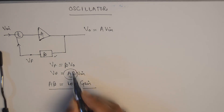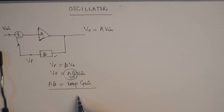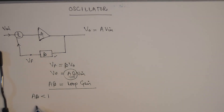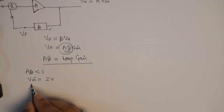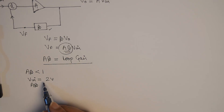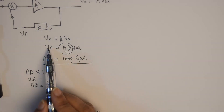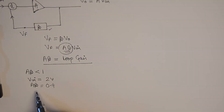Now A·beta is going to play a very vital role in the generation of oscillations. If the value of loop gain A·beta is less than 1, let us say in a specific case I have the input voltage Vin equal to 2 volts and the loop gain A·beta, which in this case is less than unity, let us say it is equal to 0.9.